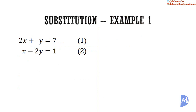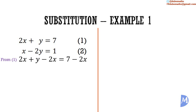Example 1. 2x plus y is equal to 7 — equation 1 — and x minus 2y is equal to 1 — equation 2. We can make y the subject of the formula in one step in equation 1. From equation 1, subtracting 2x on both sides, we get y is equal to 7 minus 2x.